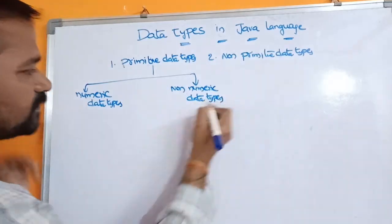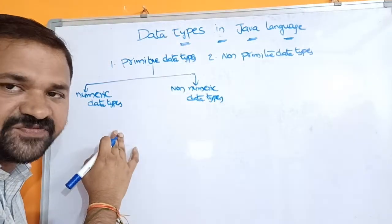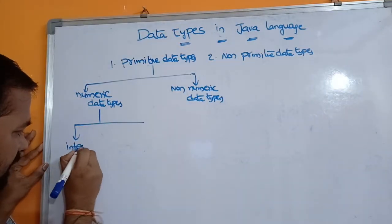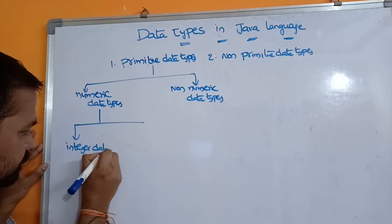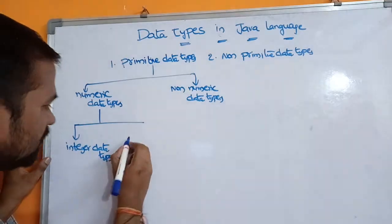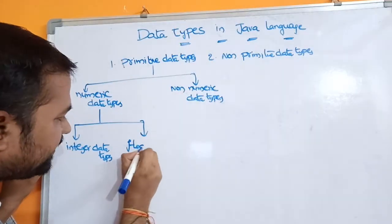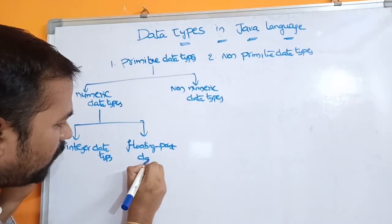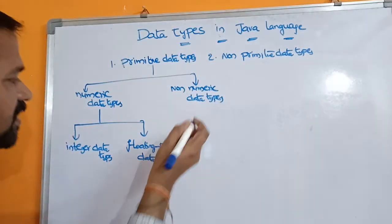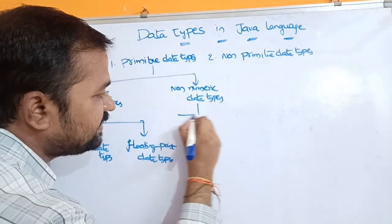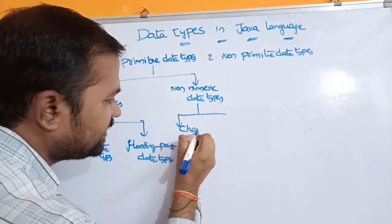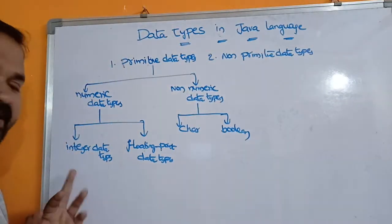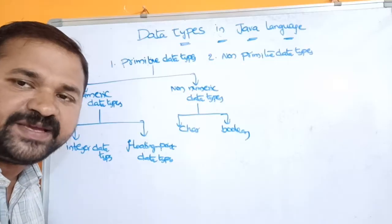Numeric data types are further classified into two types: the first one is integer data types, and the second one is floating point data types. Likewise, non-numeric data types are also classified into two types: the first one is char, and the second one is boolean.